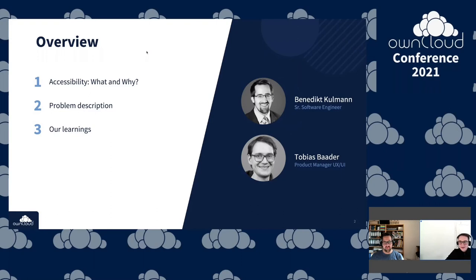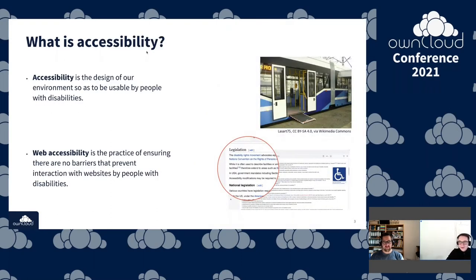Accessibility — you probably know it from the real world — is actually the design of our environment so as to be usable by people with disabilities. If you look at a picture of a tram, there's a ramp which enables people in wheelchairs to board. On the web there are similar barriers: for example, if the font size is too small, people with poor vision might not be able to read it.